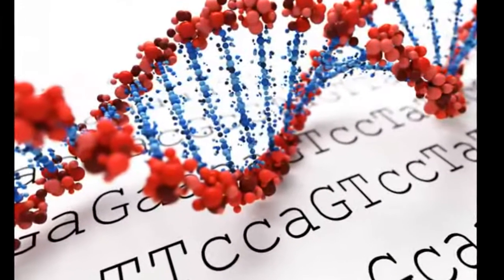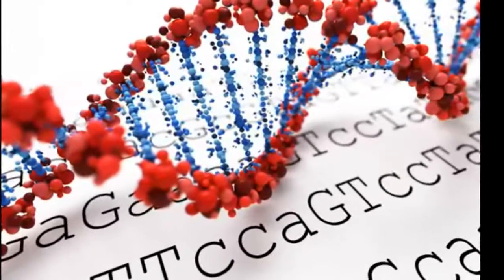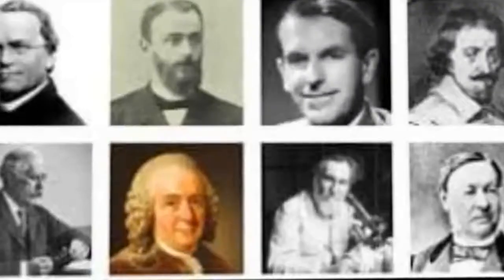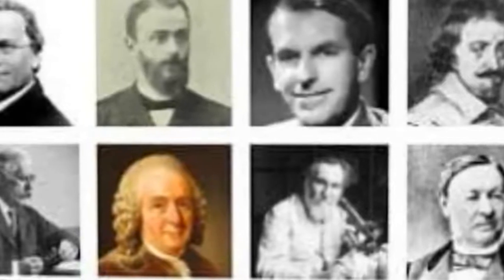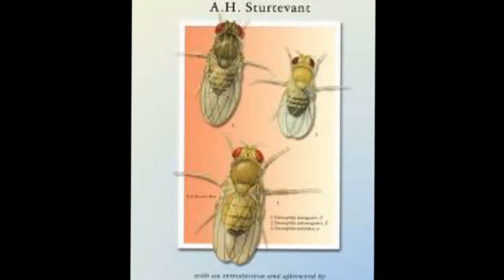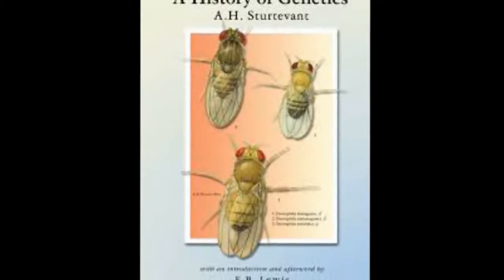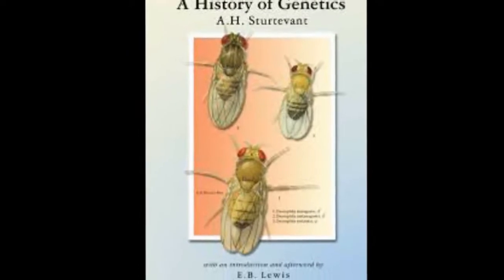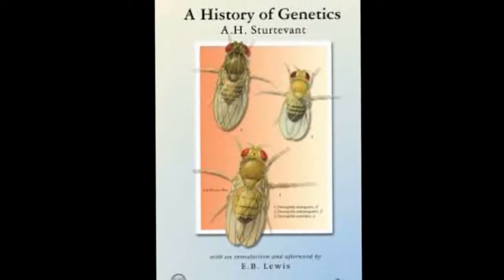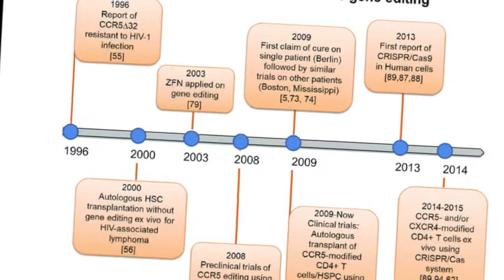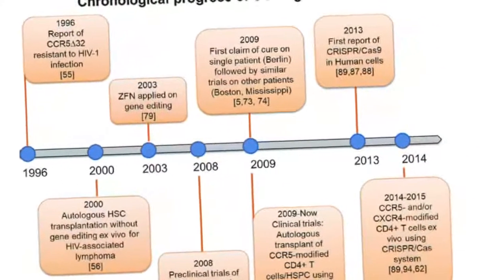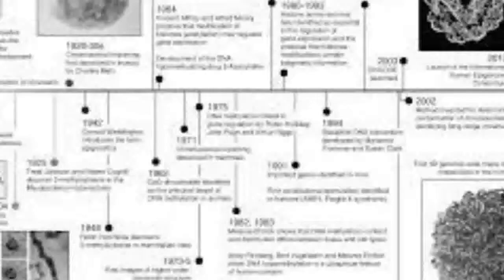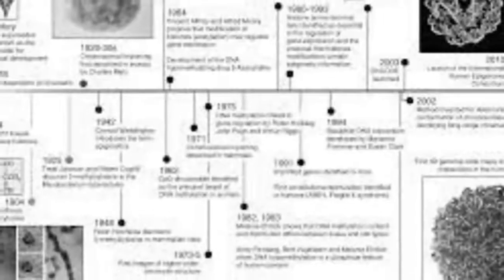With the basic patterns of genetic inheritance established, many biologists turned to investigations of the physical nature of the gene. In the 1940s and early 1950s, experiments pointed to DNA as the portion of chromosomes that held genes. A focus on new model organisms such as viruses and bacteria, along with the discovery of the double helical structure of DNA in 1953, marked the transition to the era of molecular genetics.